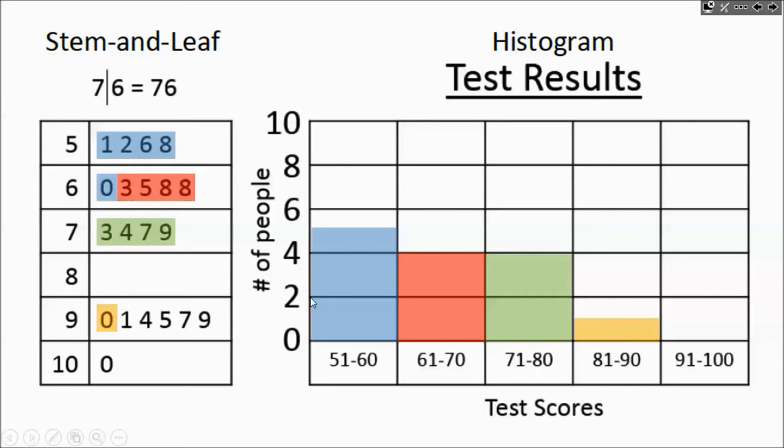And then you've got the 91 to 100. That's going to be these five and one more. So you're going to have a total of six shaded for that. Two, four, six blocks. So that represents six people scoring in the 91 to 100 zone.